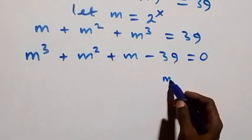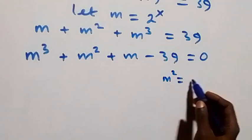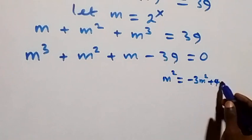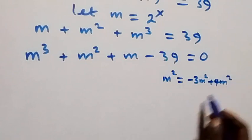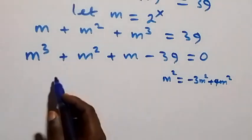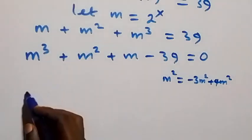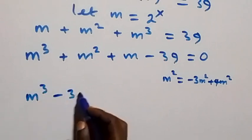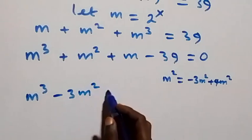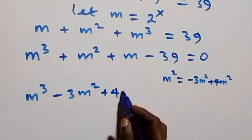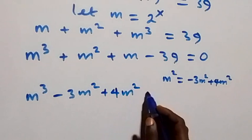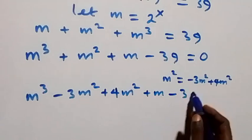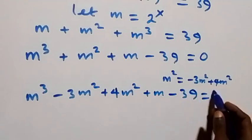From here, we rewrite the m cubed term by splitting: we write it as minus 3m squared plus 4m squared, and also rewrite m as minus 12m plus 13m, so that m cubed plus m squared plus m minus 39 equals zero.